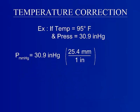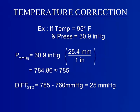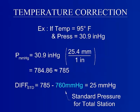Second, convert the pressure from inches of mercury to millimeters of mercury. For the purpose of this example, round to the nearest whole number, 785. Then find the difference from the standard pressure. The standard pressure for this example is 760 millimeters mercury, as seen highlighted in blue.